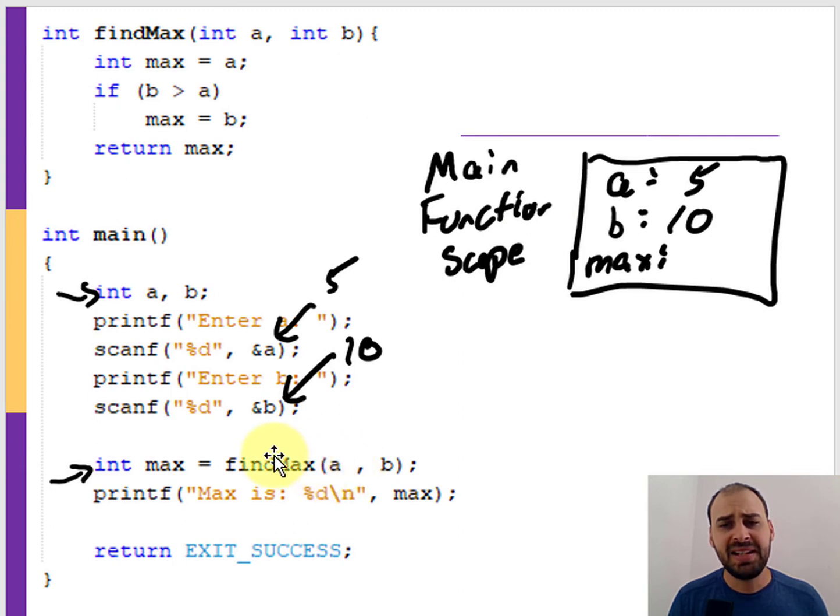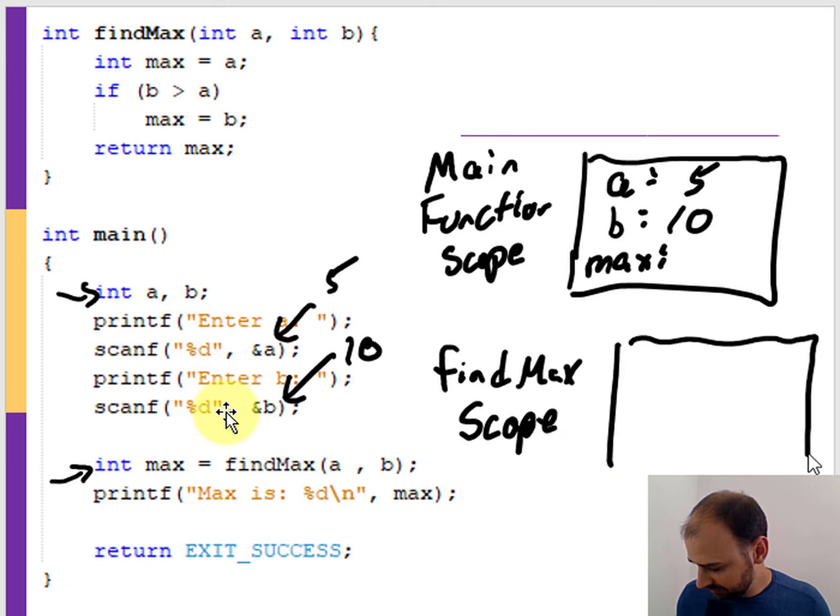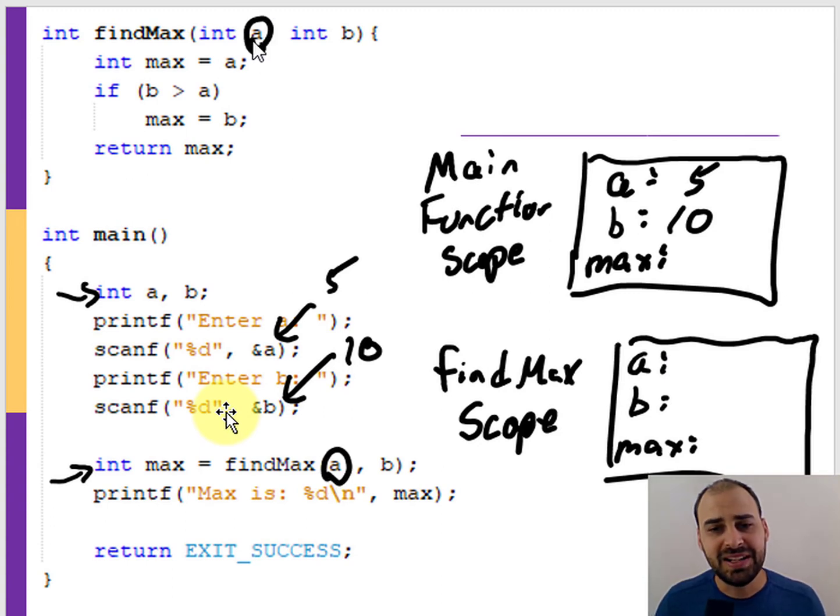And then when findMax is called, we pass in a and b into the findMax function. For the function scope there, we also have a, b, and max. Same names, but they're different variables. The findMax a gets initialized to the a from the main function scope.